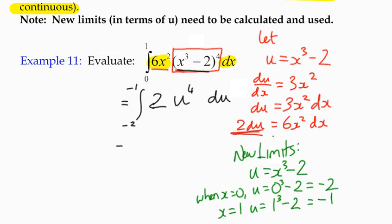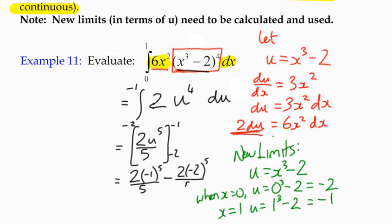So let's just go ahead and integrate. It becomes 2 u to the 5 over 5. We've not got a constant of integration because it's a definite integral. And we're going to substitute in the values negative 1 and negative 2. So the upper limit we substitute in first. So it becomes 2 times negative 1 to the 5 over 5. Subtract 2 times negative 2 to the 5 over 5.